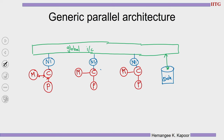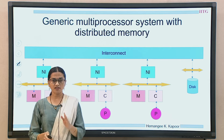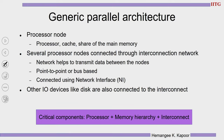This is how we can build a generic parallel architecture: processor, cache, memory, and a network interface, with each node connected through a global interconnect. The main components are: the processor node, the interconnect network which transmits data from one node to another (point-to-point or bus-based), the network interface connecting the node to the interconnect, and IO devices like disks connected to the interconnect. The critical components of a parallel architecture are the processor, the memory hierarchy, and the interconnect.